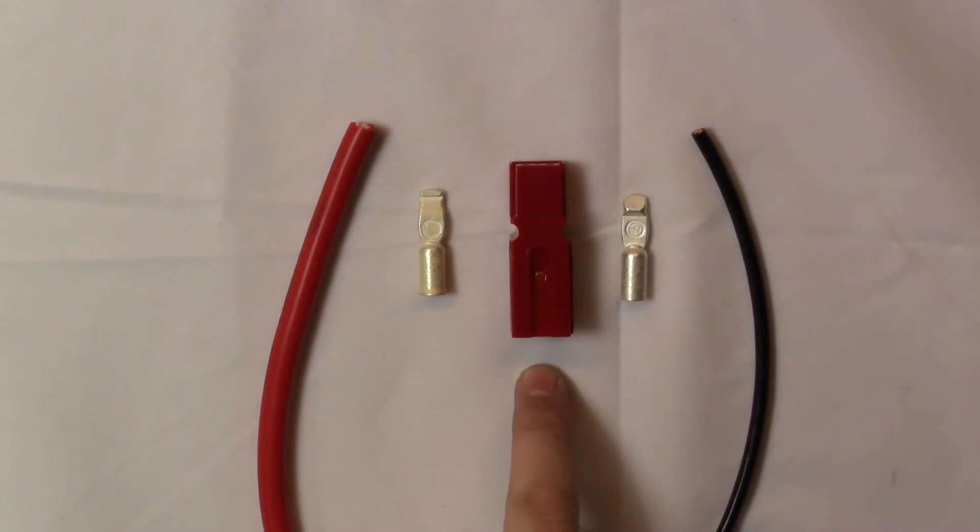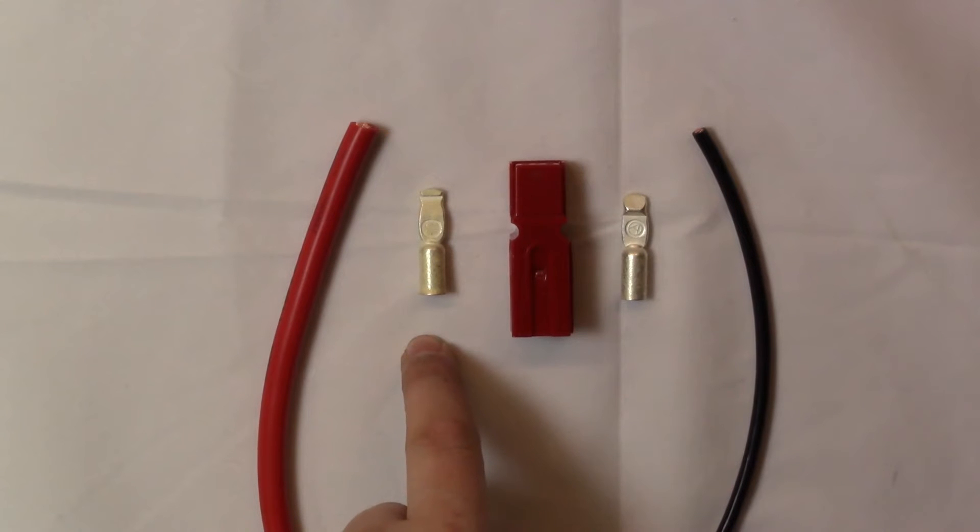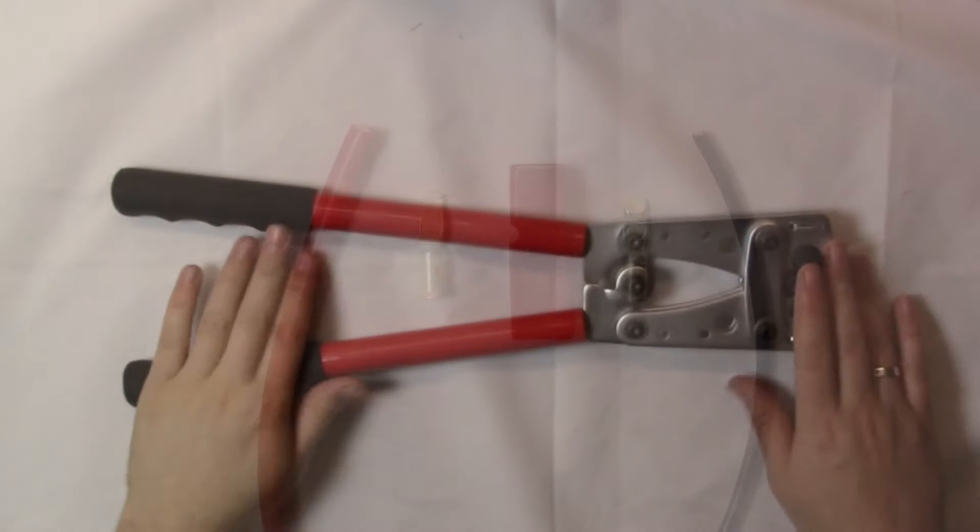Now to show you how to assemble this connection. In today's video we are going to be using the PP75 housing which can be used with terminals for the 6, 10 and 16mm² cable. For this purpose we are going to be using the 6mm² terminal and the 16mm² terminal and cables to suit.